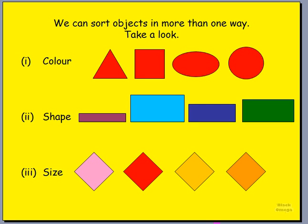First, we can sort objects out based on their color. We have in front of us a triangle, a square, then an oval, and lastly a circle. Those are all together — they're different shapes, but they're all red. So we can put them in the same group because they're the same color.